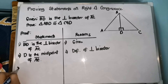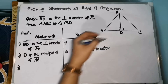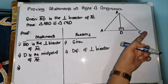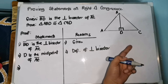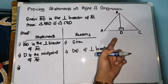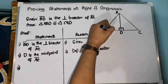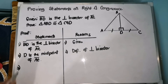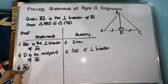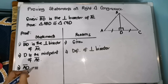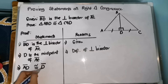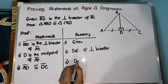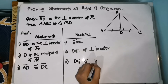From that statement, we can say that since D is the midpoint of segment AC, it divides the segment into two equal or congruent parts. So we can say that AD is congruent with DC. Our reason is the definition of midpoint.